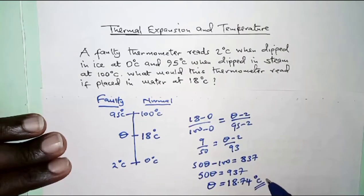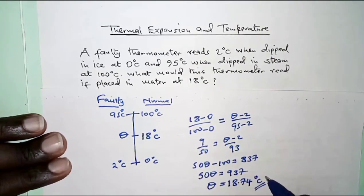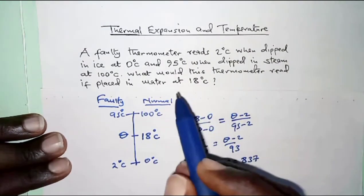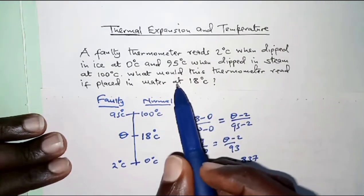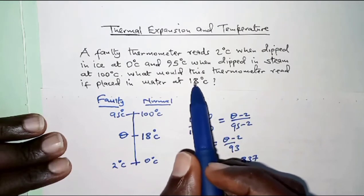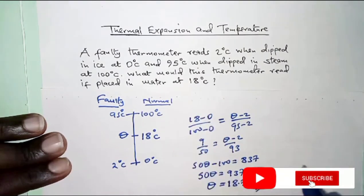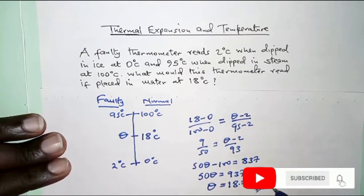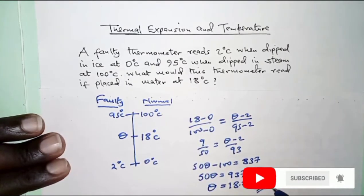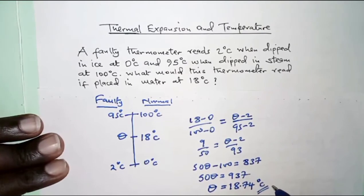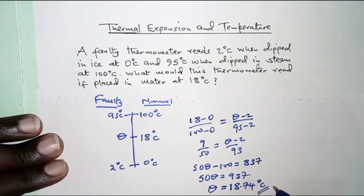So 18.74 degrees Celsius is the temperature that the faulty thermometer will read when the actual temperature of the water is 18 degrees Celsius. That is it for this question. Thank you for watching. See you in the next video.